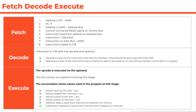In the execute phase, the opcode is executed on the operand. The ALU carries out arithmetic and logic operations during this stage. The accumulator is always in use — it stores values used in the program. When values are input by the user, loaded from memory, outputted to the user, or written to memory, the accumulator is involved. Addition adds a value from memory to whatever is in the accumulator; subtraction subtracts a value from memory from the accumulator.